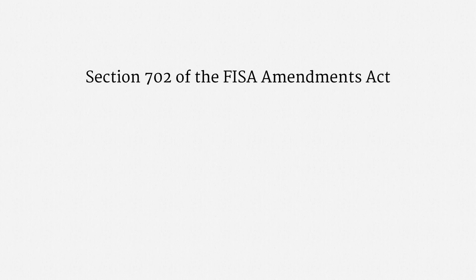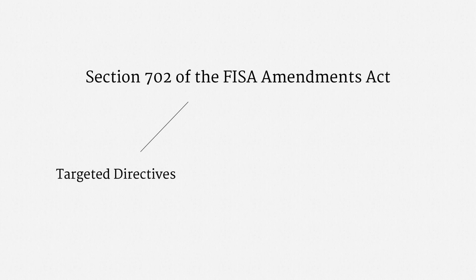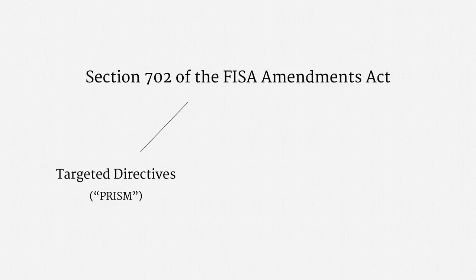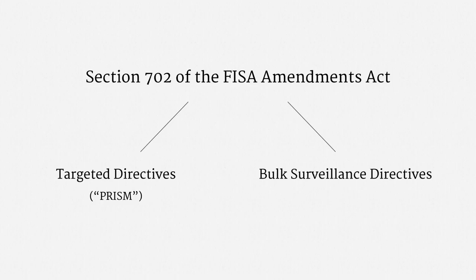Broadly speaking, there are two types of directive that the Department of Justice has sought to issue under Section 702. The first type is a targeted directive — a demand served on a particular technology service for stored or prospective data associated with particular accounts. The PRISM program, which we'll look at in the next part of the course, is an instance of targeted Section 702 directives. The second type is a bulk surveillance directive. The program associated with these directives is usually termed upstream collection.